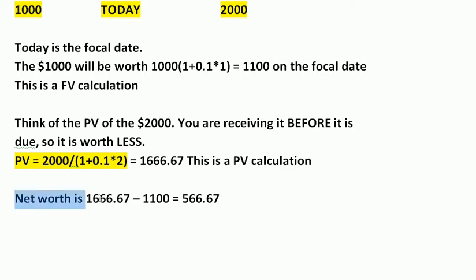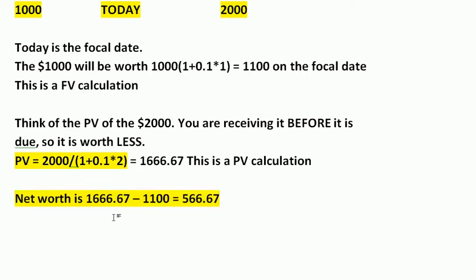So the net worth — your net worth today on the focal date — combines those two things. You are owed two thousand dollars, but the present value of that two thousand dollars is 1,666.67. However, your debt of a thousand dollars has also increased because you've let it run for a year, growing to 1,100. Therefore, the difference between the two is your net worth, which is 566.67.